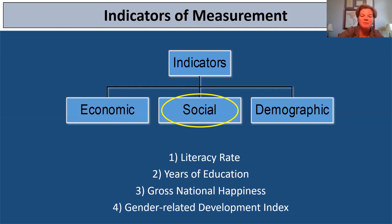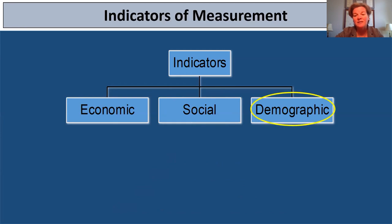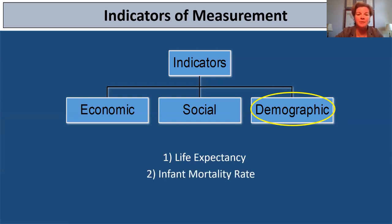Another social indicator is the gender-related development index — not just years of education, but also types of jobs for different genders, or how many people in government legislatures are male versus female. And then finally, let's look at some demographic indicators of measurement. Life expectancy — how long is one expected to live — we want this to be as high as possible, as it suggests a healthy society. Infant mortality rate is another demographic indicator — we want this to be very low. Natural increase rate is another. All of these are just examples of demographic indicators of measurement.